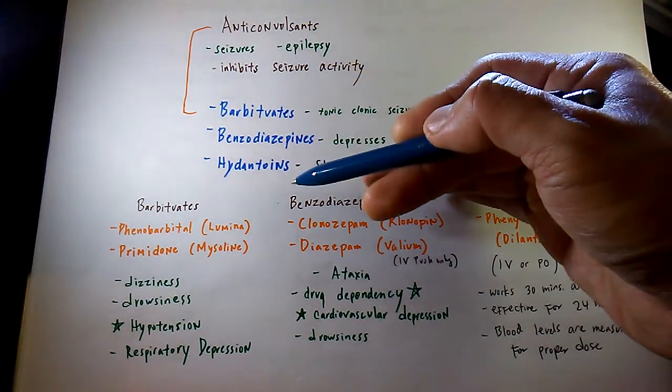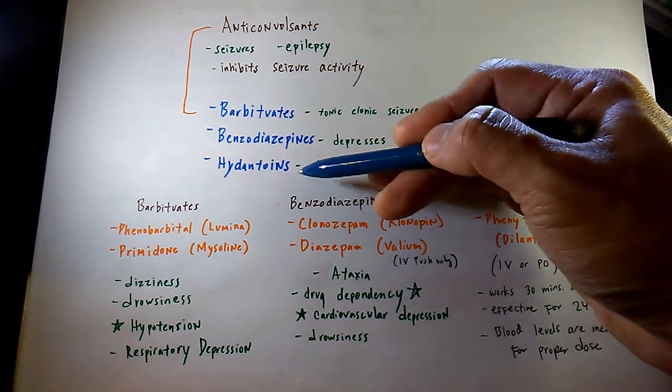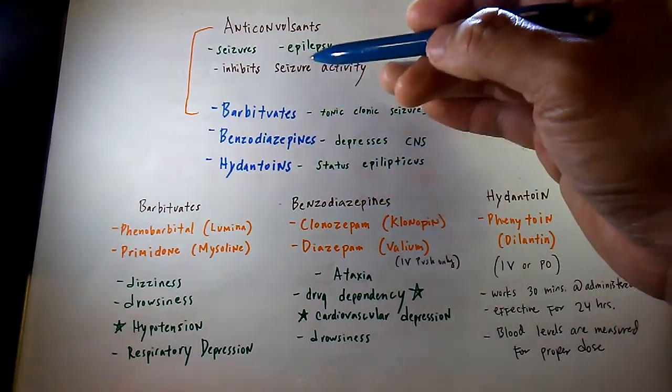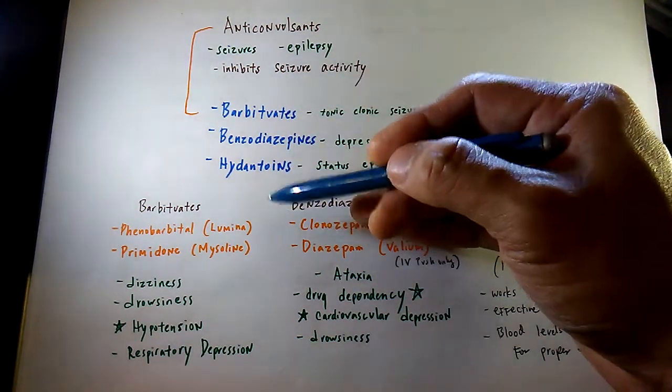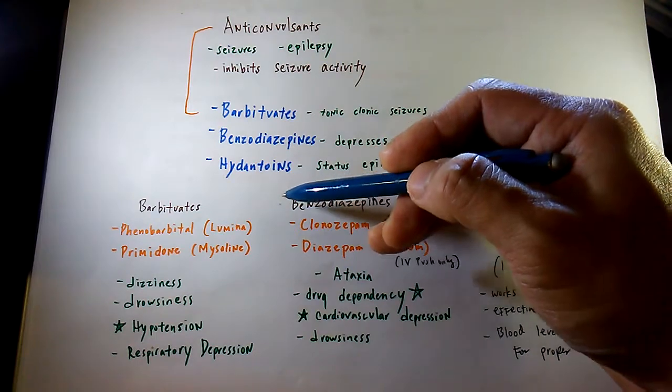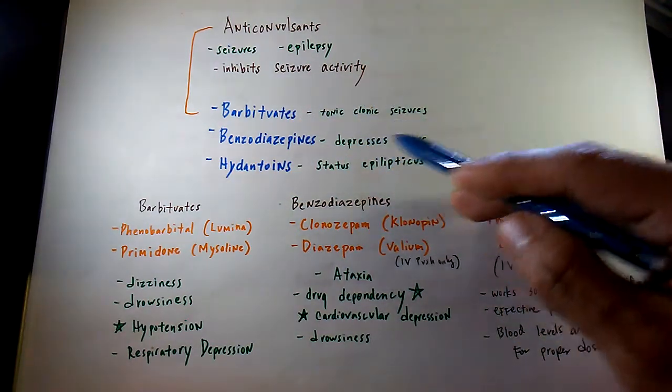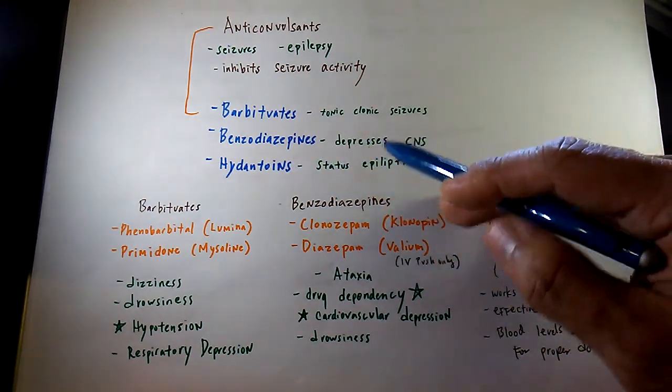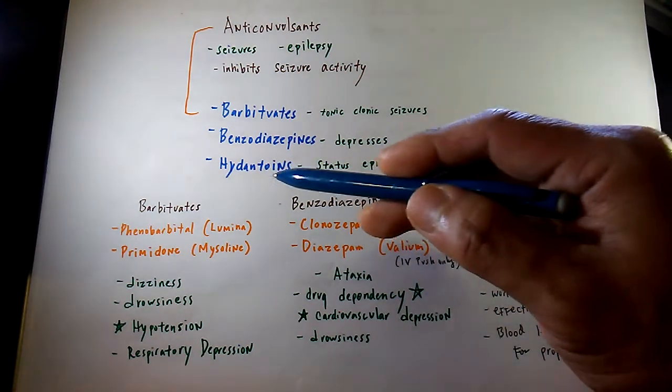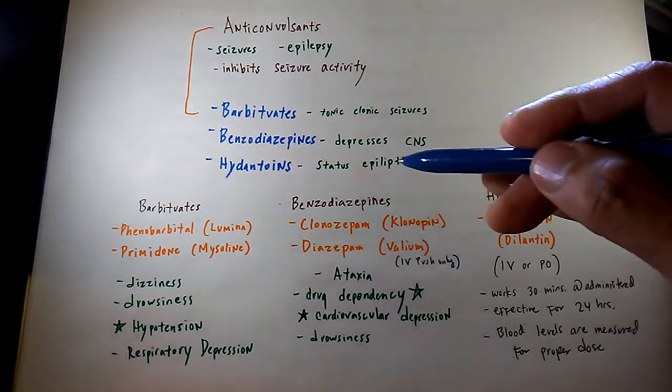I'm going to go over three main categories you'll most likely encounter on the NCLEX exam. We'll cover barbiturates, usually used for tonic-clonic seizures; benzodiazepines, used as CNS depressants; and hydantoins, mostly used for status epilepticus.